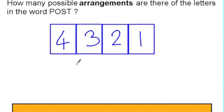Mathematically what we need to do now is to multiply these numbers together. Four times three times two times one and we still get the answer of 24.